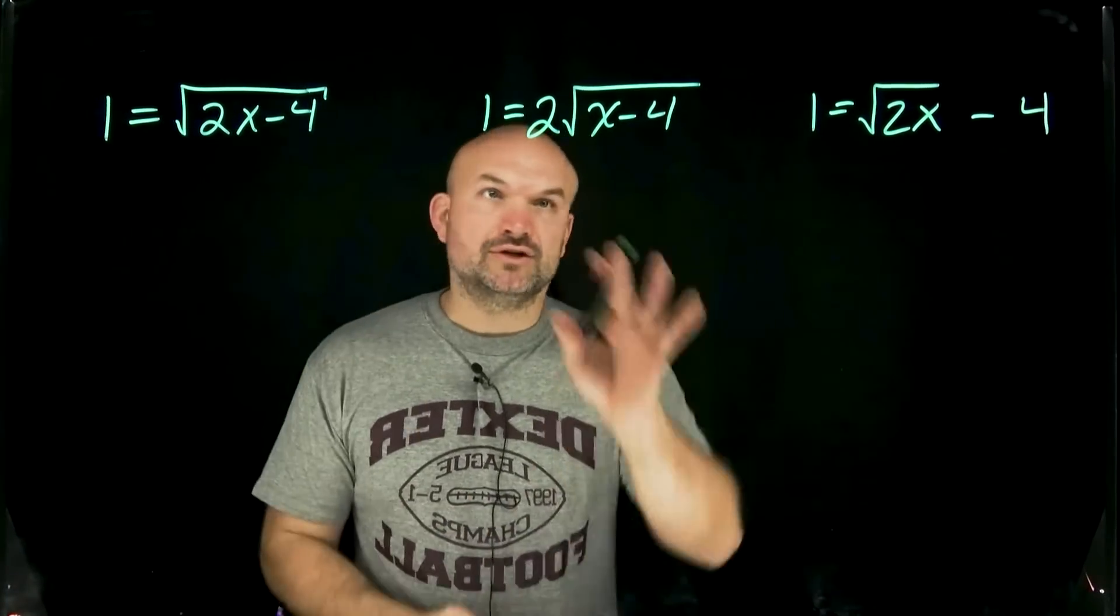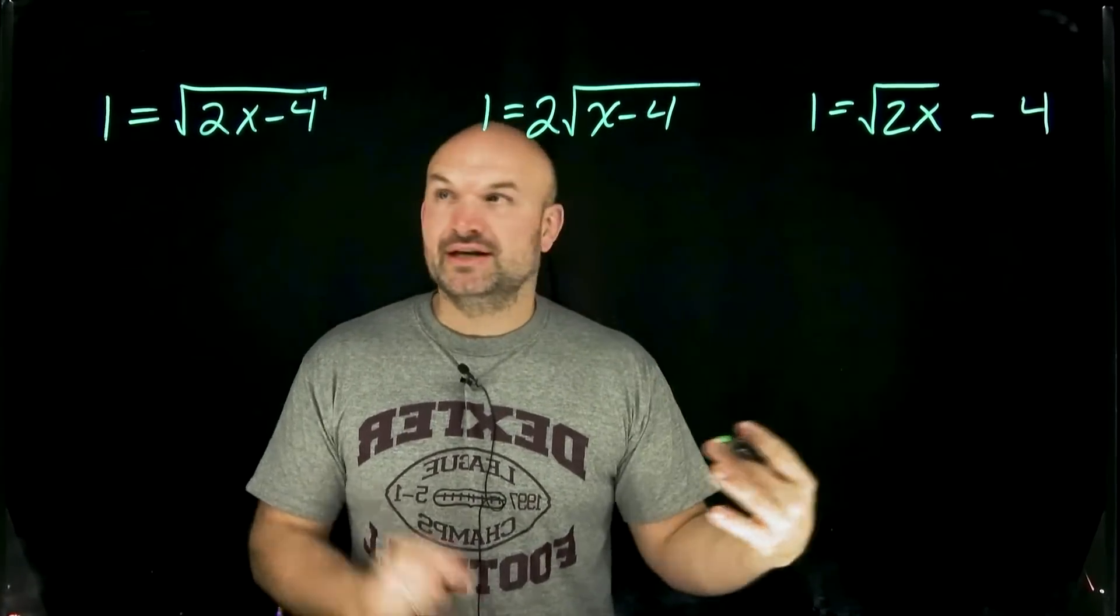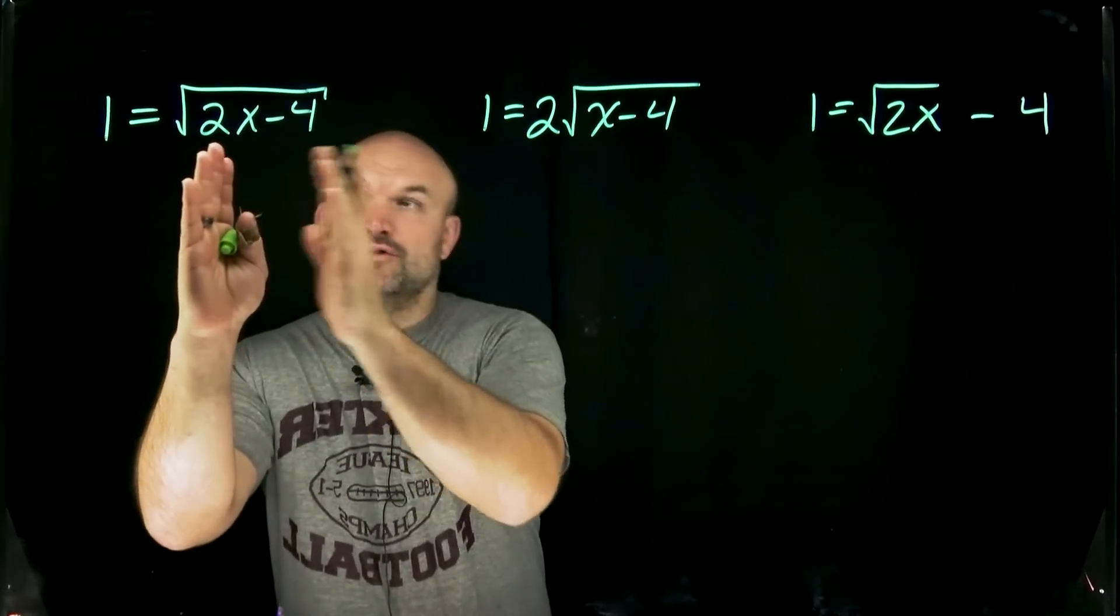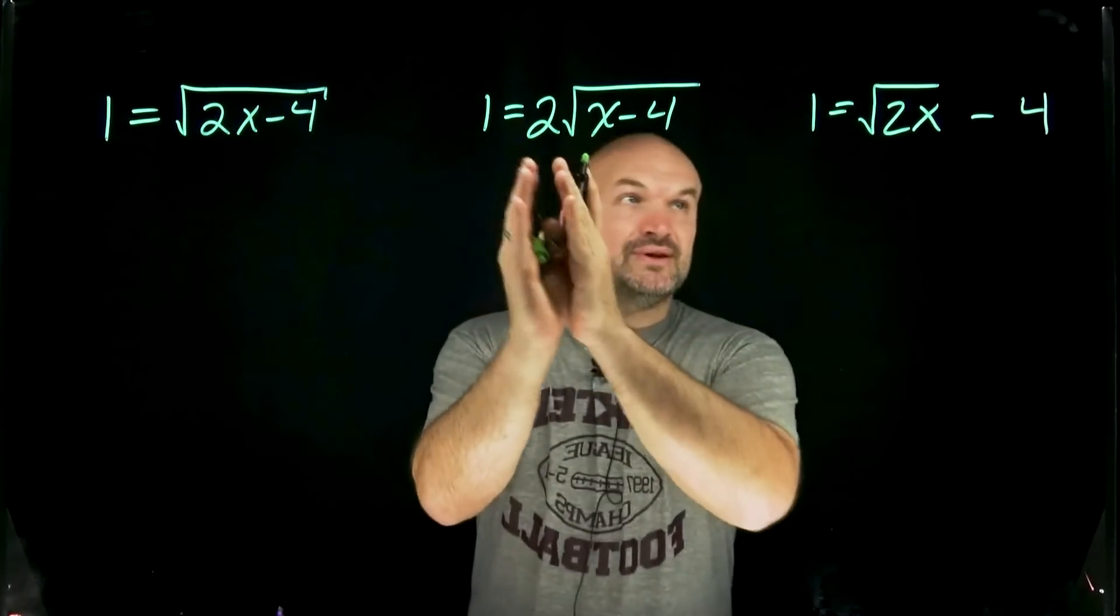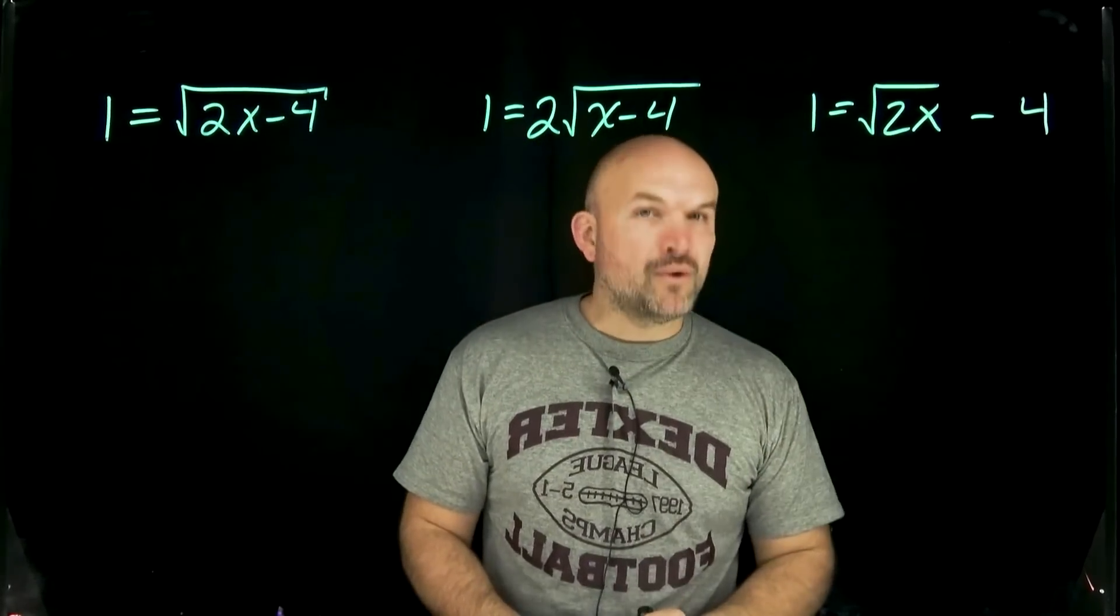Let's talk about how the radical changes our solution. Notice in this example I have the radical over our whole expression on the right-hand side. Here I have a 2 on the outside and here I have a 4 on the outside.